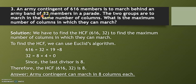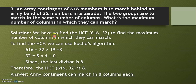Next question: An army contingent of 616 members is to march behind an army band of 32 members in a parade. The two groups are to march in the same number of columns. What is the maximum number of columns in which they can march? The solution is found by calculating the HCF, since we need the maximum number of columns.